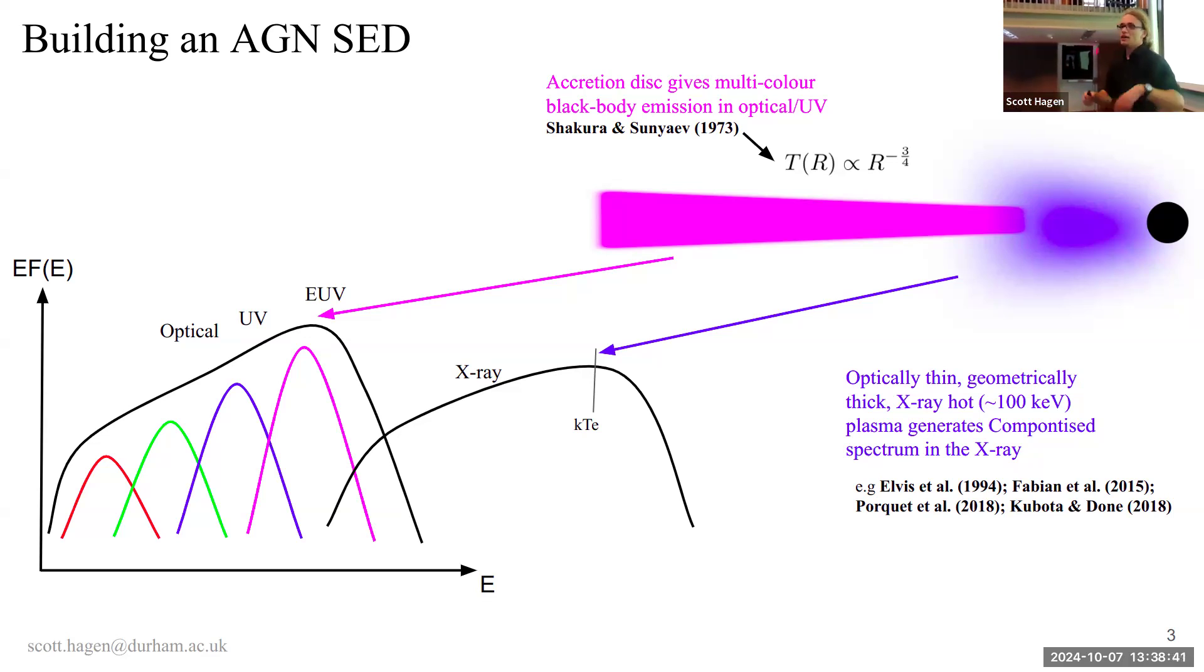One way of doing it is you could think about a case where maybe your disk truncates at some radius. And instead of having this geometrically thin, really dense structure, you have now a geometrically thick, much less dense plasma, which takes seed photons from the disk, and Compton scatters them to higher energies. And so it gives you this high energy X-ray tail.